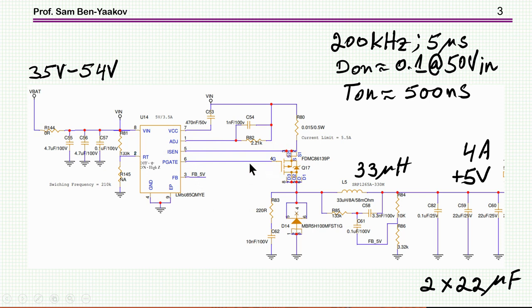This is a PMOS, so we need a negative going with respect to the source, negative going pulse. This is now the inductor, this is the Schottky diode. There is a snubber here which is not relevant to what we are talking about.